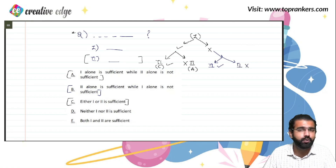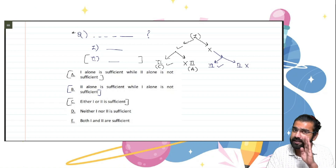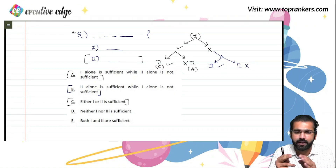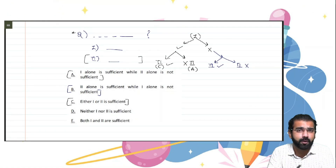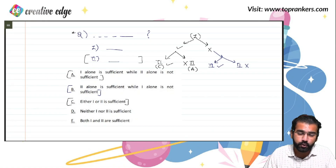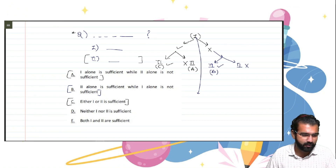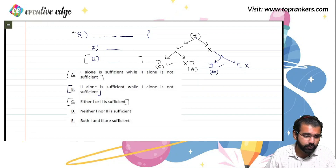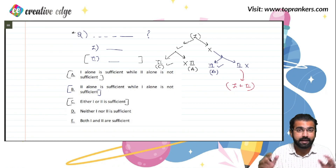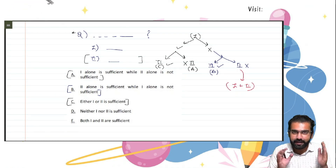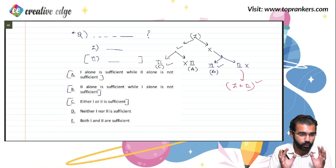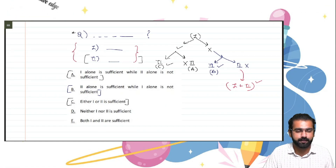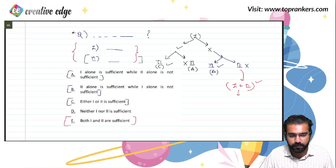Now let's assume that statement 2 alone was also not sufficient. You tried statement 1 alone — question not solved. You tried statement 2 alone — question not solved. Before concluding that neither 1 nor 2 is sufficient, there is one more possibility. You try to solve it by combining both statements together — merging the data from statement 1 and statement 2. If after doing that you are able to figure out the answer, you say both statements together are sufficient, and you mark option E.